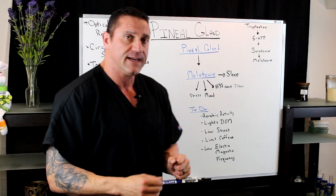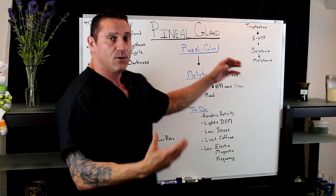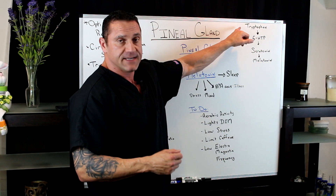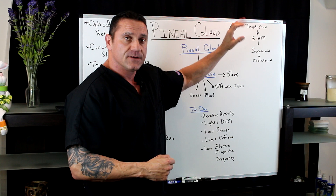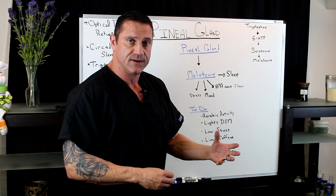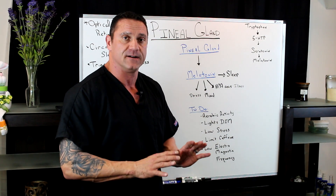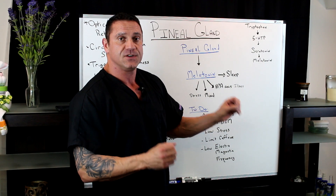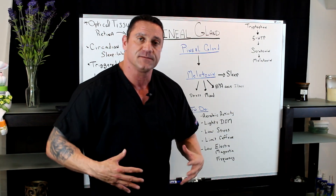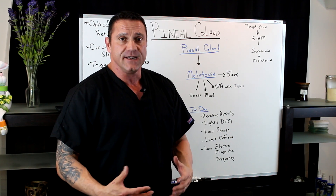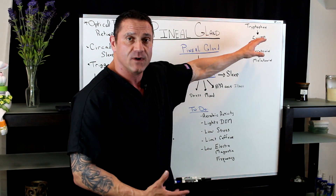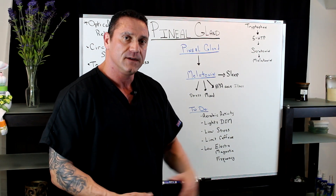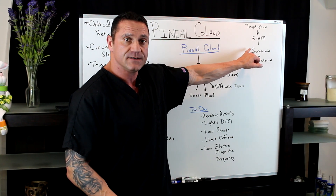The pineal gland secretes melatonin. We make melatonin through a cascade starting with tryptophan, which converts into 5-HTP, then converts into serotonin — your calming neurotransmitter — and then from serotonin into melatonin. This is why if you have a bad gut, since 80% of our serotonin is produced in our gut, you're not producing enough melatonin and you're not sleeping well if you have poor digestion or malabsorption.